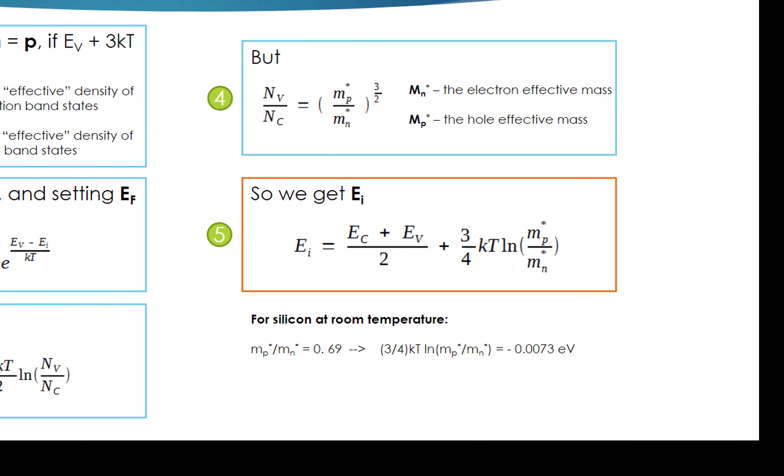The ratio between Nv and Nc can be expressed as a relationship of the electron effective mass Mn asterisk and the hole effective mass Mp asterisk. Then we get the final result of EI as (EC plus EV) over 2 plus (3/4) times KT times ln(Mp asterisk over Mn asterisk).